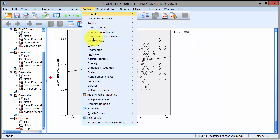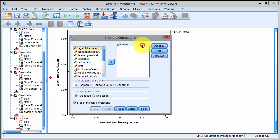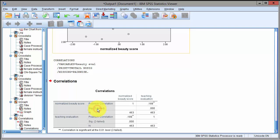Then for correlation, we click on analyze, then on correlate, bivariate, pick the two variables which are the beauty score and the teaching evaluation, click on OK. Here we go.